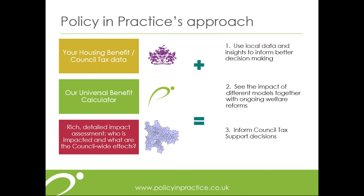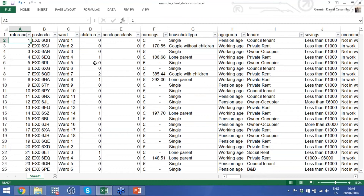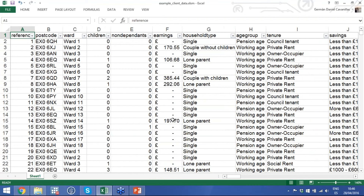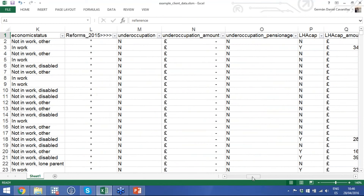Once that is done, it allows us to give you incredible insights into the data and go down to the household level to see which specific households are affected by which reforms and how. I'm going to show you an example of the kind of dataset we give to clients at the end of these projects, which will be very helpful for understanding what you can do after our analysis. So let's imagine we've finished the analysis work and delivered a report.